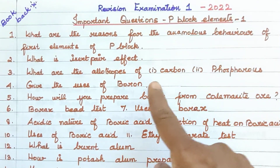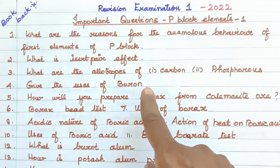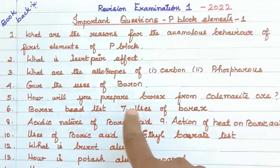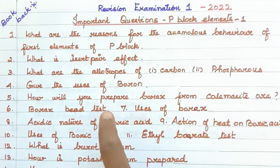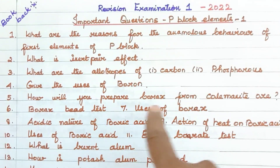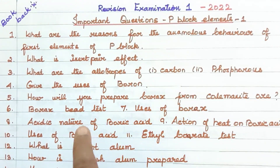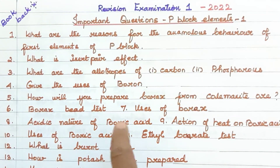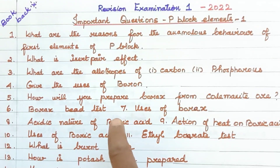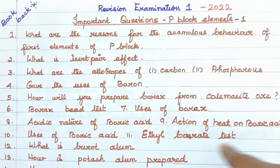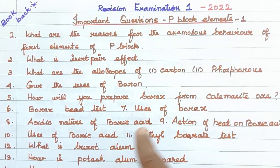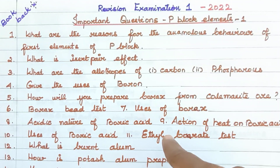Give the uses of Boron. How will you prepare Borax from Colemanite? Borax bead test. Uses of Borax. Acidic nature of Boric Acid — Boric Acid is acidic in nature. Action of heat on Boric Acid. Uses of Boric Acid. Ethyl Borate test.